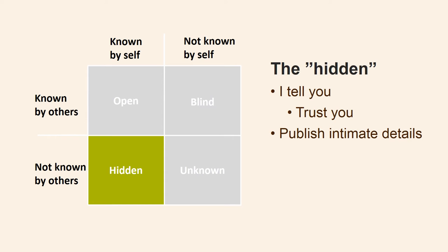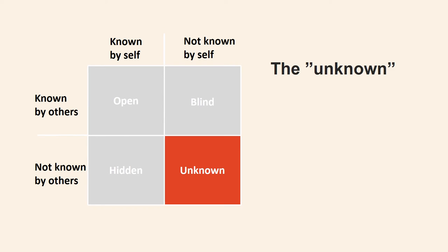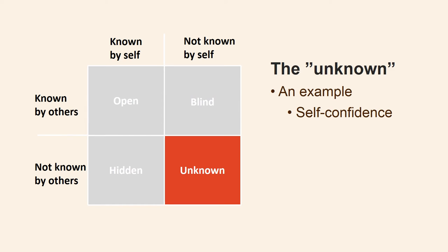Some people have almost nothing in the hidden quadrant — they publish all their intimate details online on social media such as Facebook. The unknown quadrant represents things that neither I know about myself nor you know about me. It is actually hard to come up with examples, but I will try. I was aware that I did not like to hold speeches for large gatherings, and I later found out that this was due to a lack of self-confidence — I simply could not imagine that I could say anything that might interest more people at once. Neither I nor others knew that this was the reason for my discomfort about holding speeches.